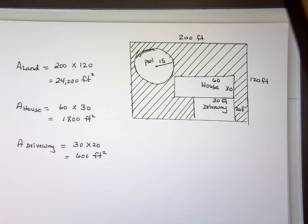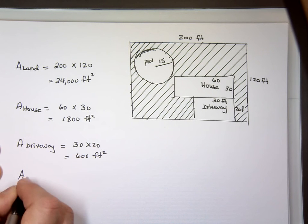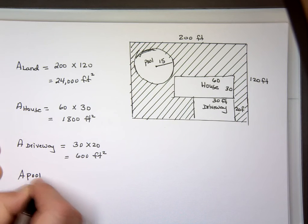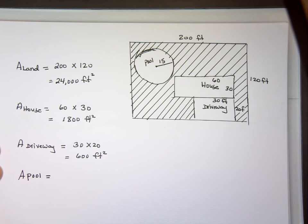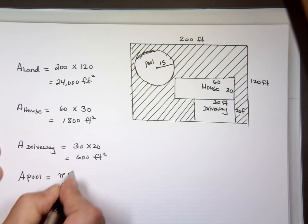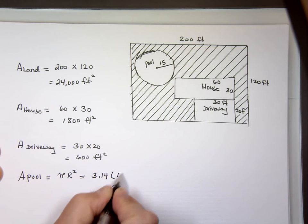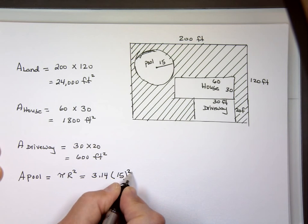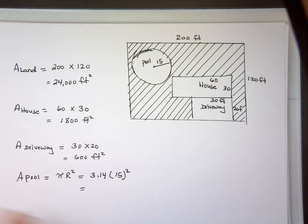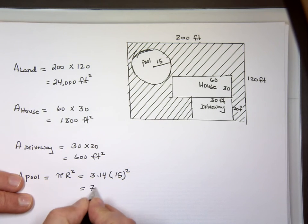And finally, the area of the pool, which is pi times r squared. Pi is 3.14, and r is 15. You got to square it. When you square the 15, it's 225. 225 times 3.14, approximately that's 707, or 706.5 to be exact.